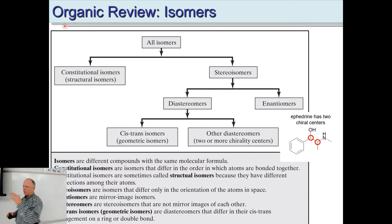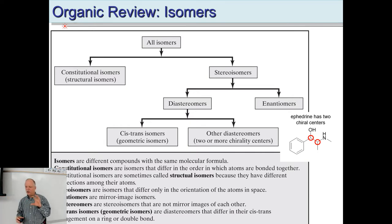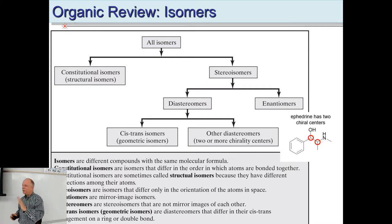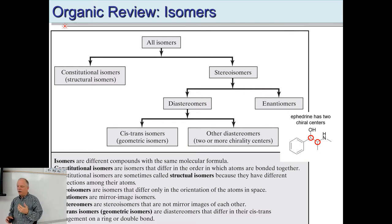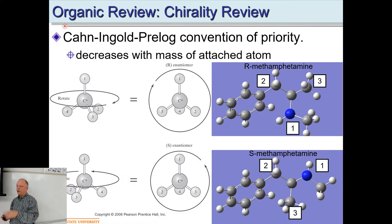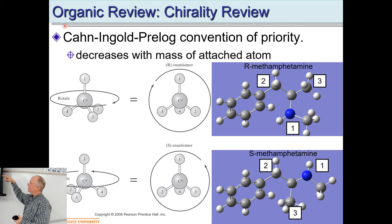As a review: we've got constitutional isomers, which are just different structures. Then you have stereoisomers — things that rotate plane-polarized light that have chiral centers. If you think about ephedrine, the cold medicine, it has two chiral centers. And so when you make methamphetamine, you're going to end up with different chiral centers.